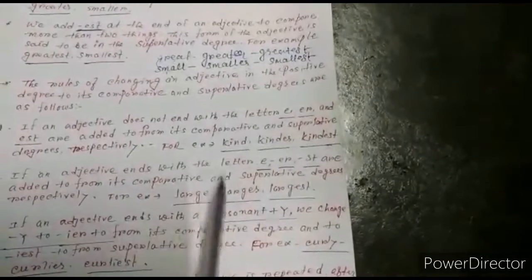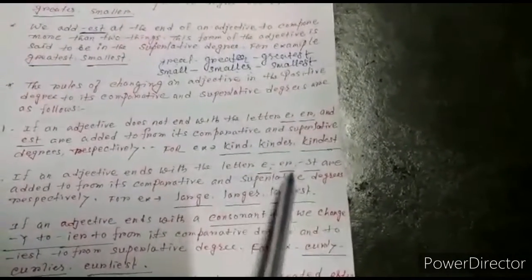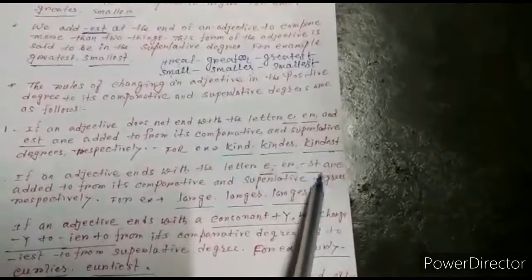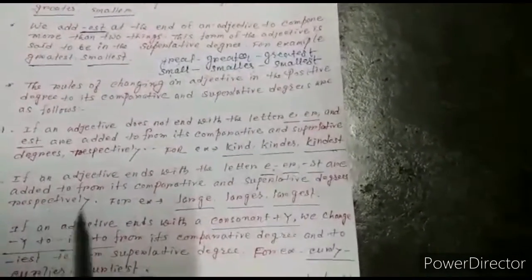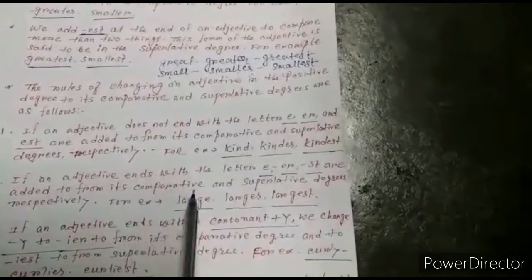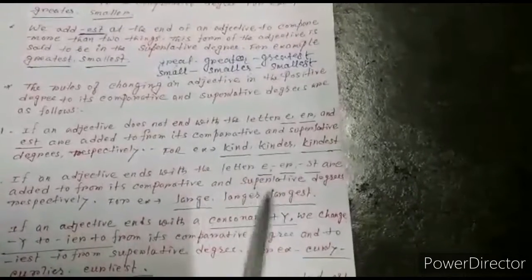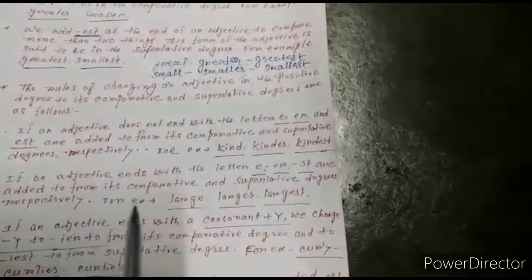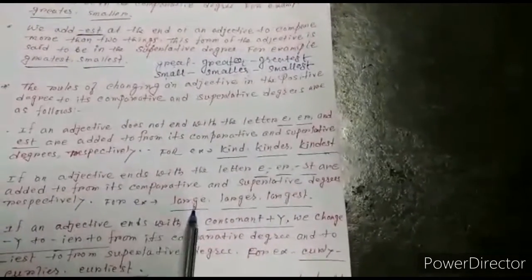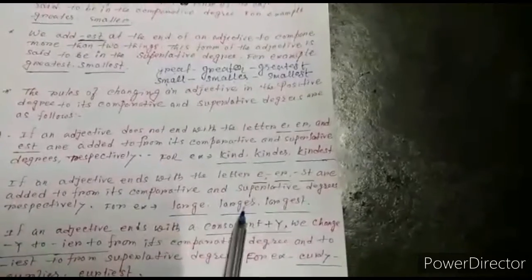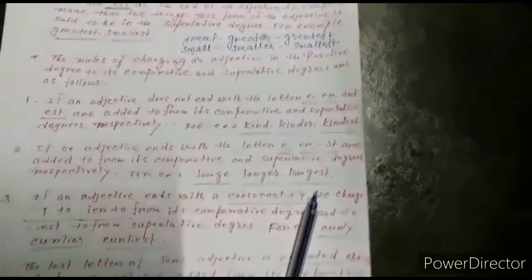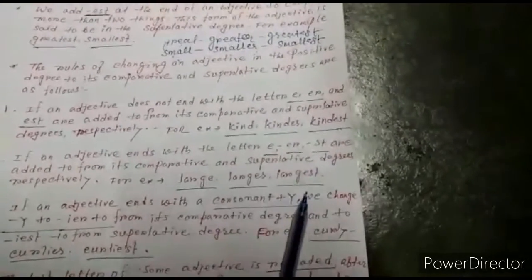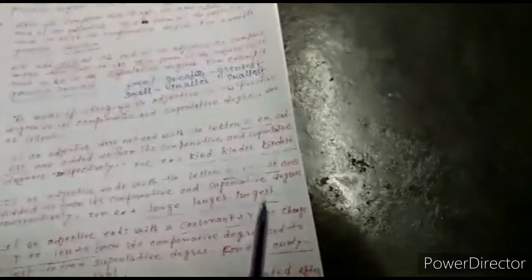Number 2: If an adjective ends with the letter E, add R and ST to form its comparative and superlative degrees respectively. For example: large → larger → largest.